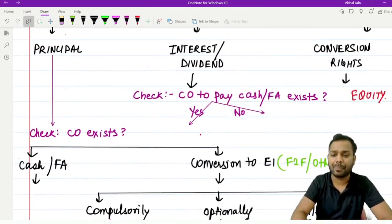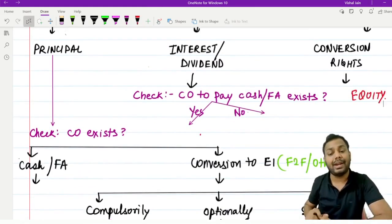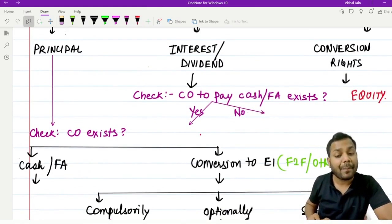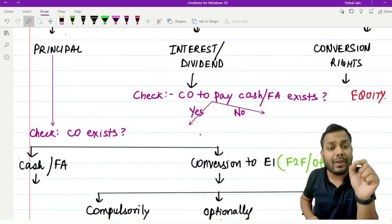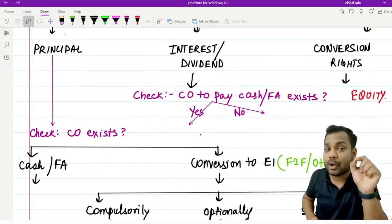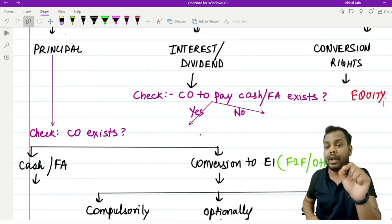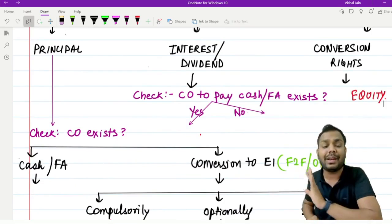Now coming to the next one, interest or dividend. We have to assess whether the entity has a contractual obligation to pay cash or any other financial asset.